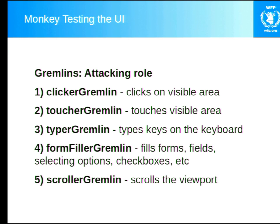Now, how about the bad guys? We have the gremlins — they're there to try and destroy your user interface. There are five types. The clicker gremlin clicks on visible parts of your interface. The toucher gremlin will touch, slide, and multi-tap the interface, more appropriate for touch interfaces like mobile or tablet. The typer gremlin randomly types keys on the keyboard at certain places in the interface. The form filler gremlin specifically chooses form elements — text areas, checkboxes, selects — and types random things there as well. And the scroller gremlin scrolls horizontally and vertically, trying to find a point where it can break your application.